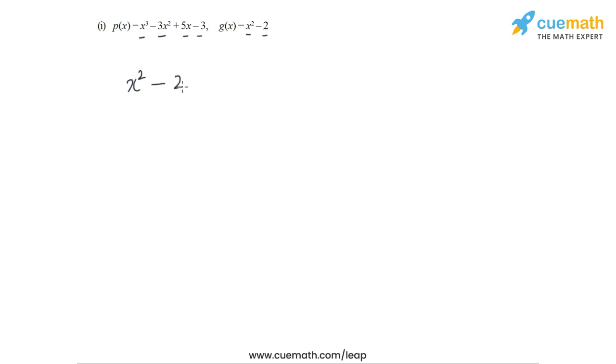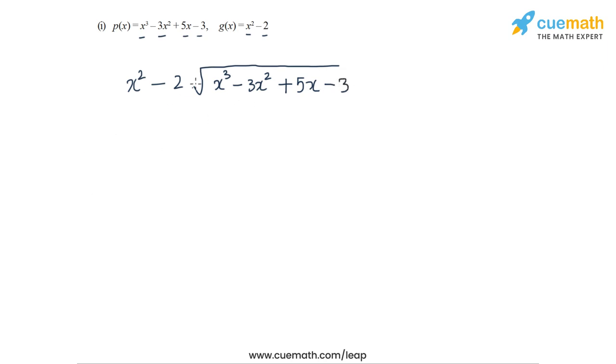Let's start with part one. The dividend polynomial is x³ - 3x² + 5x - 3 and the divisor polynomial is x² - 2. So let's write our divisor x² - 2 and then the dividend x³ - 3x² + 5x - 3, and now let's start the long division process.